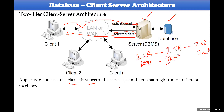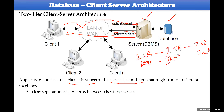In client-server architecture, the client is at the first tier and the server at the second tier, running on different machines and possibly at different geographical locations. For example, Gmail's server is somewhere else geographically, but you access your mail through a web browser. This is a clear separation between the database server and the client.